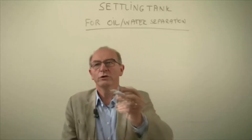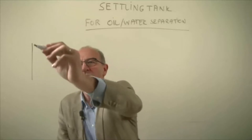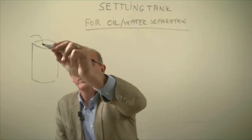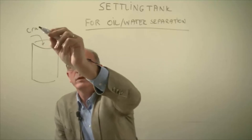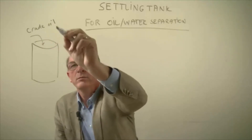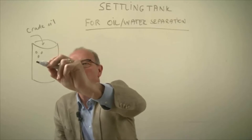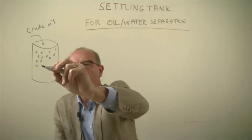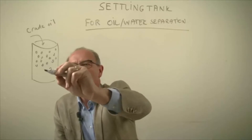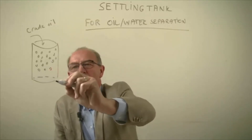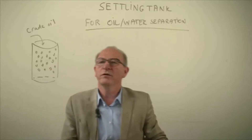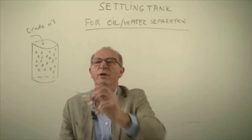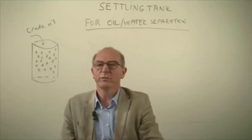On shore we sometimes use huge vessels in which we put the crude oil, but also in this crude oil a small amount of water is present as droplets. What we do is we leave this crude oil for a certain time in this settling tank to separate the oil and the water from each other.